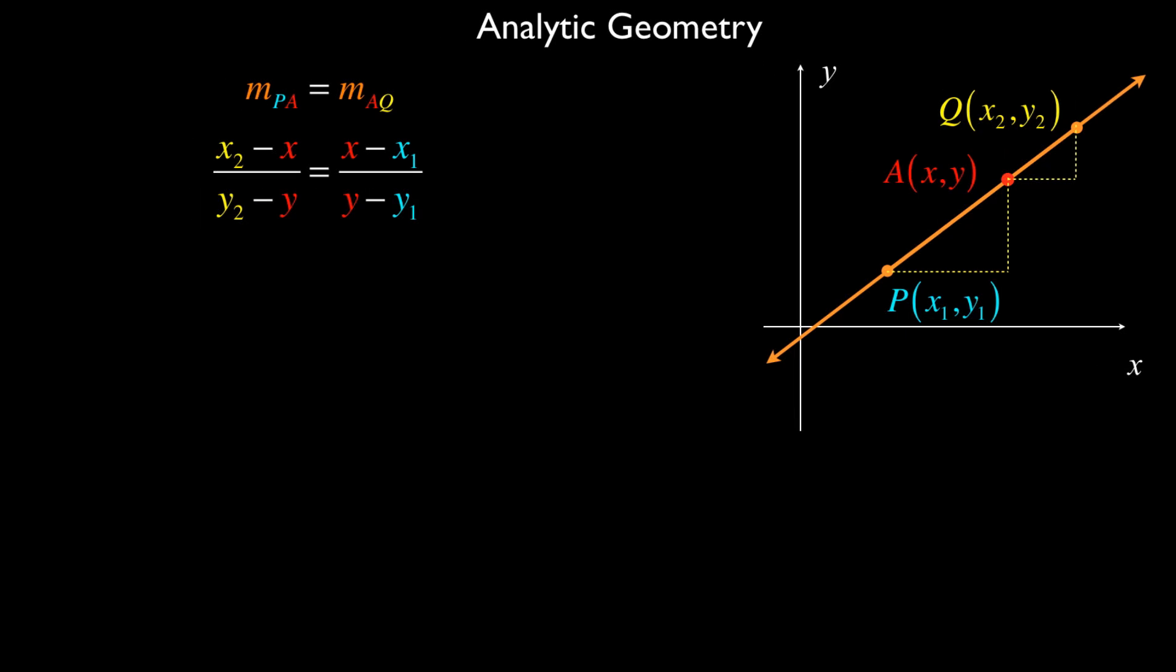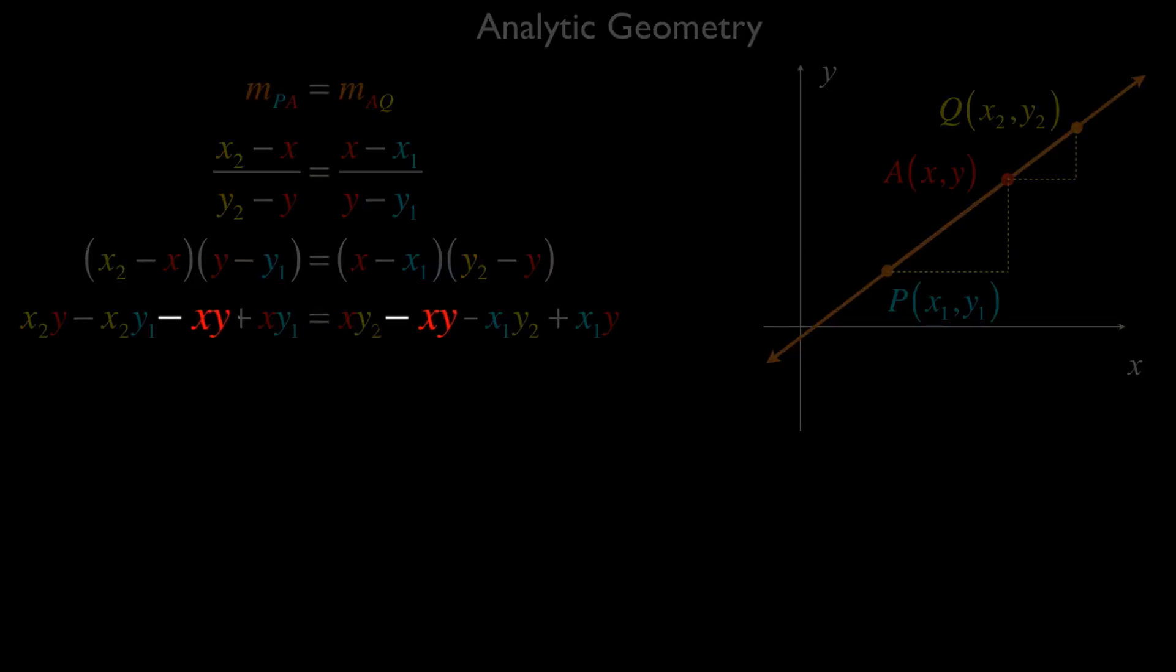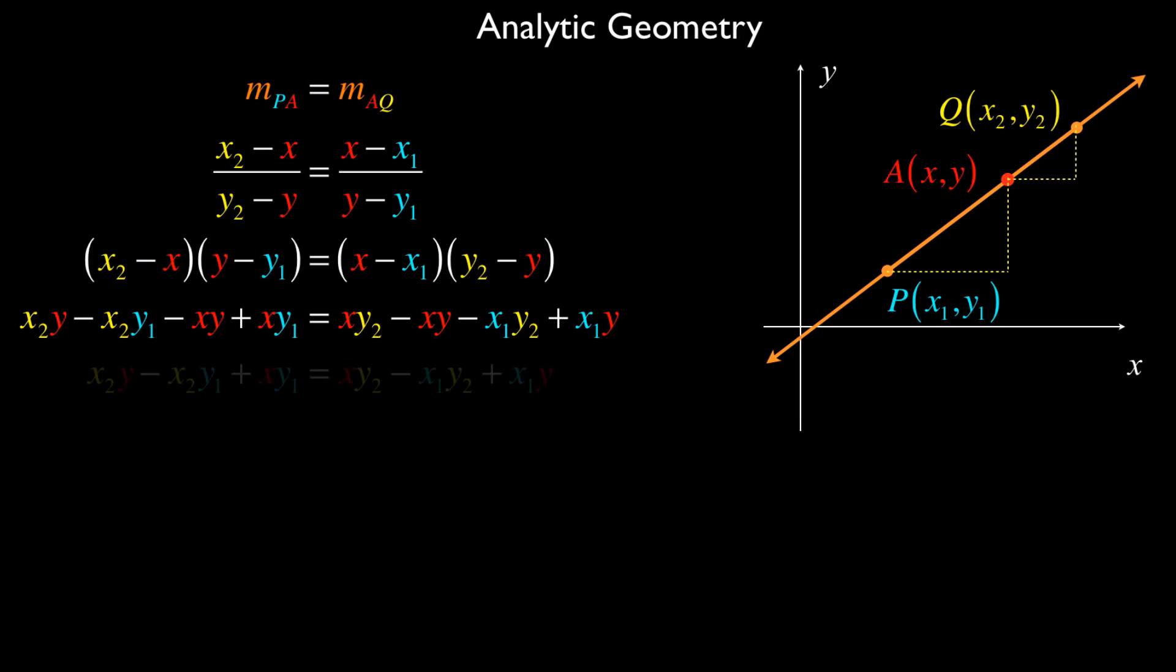Now the next step involves a little bit of algebra, but it's not too bad. I'm going to cross multiply these two ratios, and that will look something like this. I'll multiply (x2 minus x1) times (y minus y1), and say that has to be equal to (x minus x1) times (y2 subtract y). If I expand using the distributive property, or what we often call with binomials FOIL, I get the expressions on the left and right. From that point, I simplify by recognizing I have a negative xy on both sides of the equation, so that will disappear.